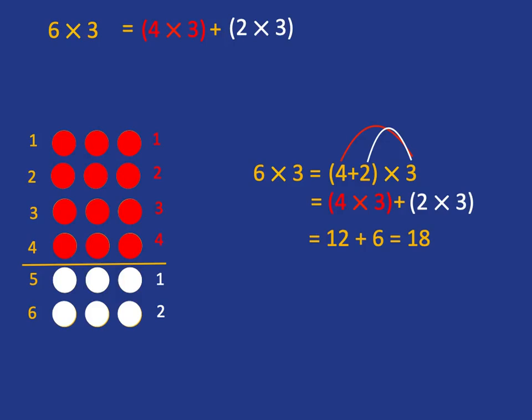What we have here, the fact that the 3 needs to multiply with the 4 and also the 3 needs to multiply with the 2, is known as the distributive law.